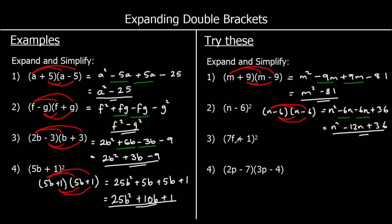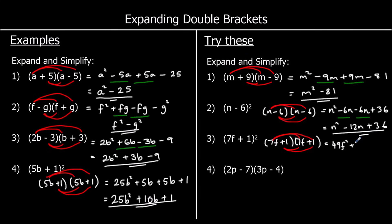Question 3: (7f+1) squared means (7f+1) times (7f+1). So it's 7f times 7f, 7f times one, one times 7f, and one times one. 7f times 7f: seven sevens are 49, f times f is f squared, so 49f squared. 7f times one is 7f. One times 7f is also 7f. And one times one is one. Collecting like terms: 7f plus 7f is 14f, so we've got 49f squared plus 14f plus one.